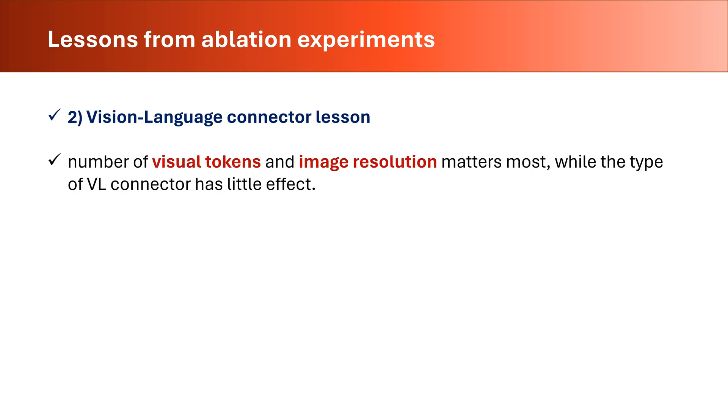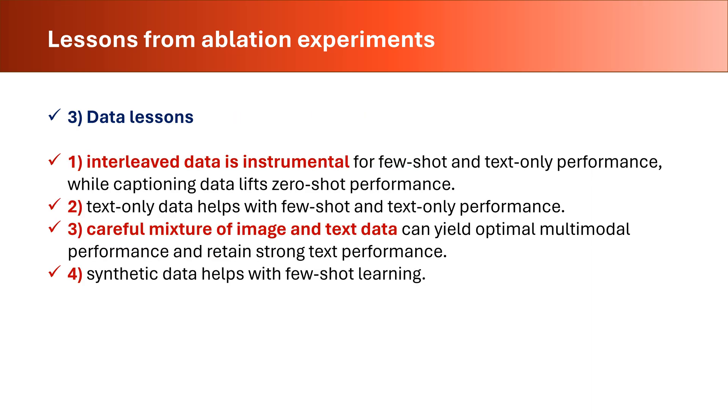The vision-language connector lesson can be stated this way: the number of visual tokens and image resolution matters most, while the type of VL connector has little effect. Finally, data lessons comprise four main conclusions. One, interleaved data is instrumental for few-shot and text-only performance, while captioning data lifts zero-shot performance. Two, text-only data helps with few-shot and text-only performance. Three, careful mixture of image and text data can yield optimal multimodal performance and retain strong text performance. Four, synthetic data helps with few-shot learning.